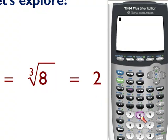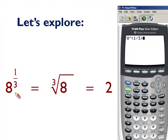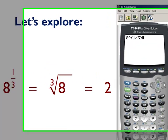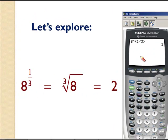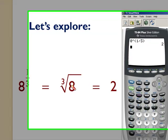We can verify this with our graphing calculator by entering 8 raised to the 1 divided by 3 in parentheses. So 8 raised to the 1 divided by 3 is the same as 8 to the 1 third. We press enter, and we have 2.